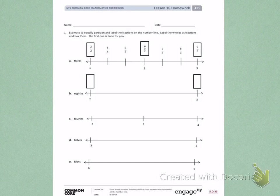Number 1. Estimate to equally partition and label the fractions on the number line. Label the wholes as fractions and box them. The first one is done for you.